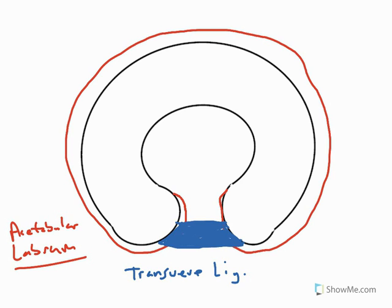So the acetabular labrum and the transverse ligament. Now, as anything else we really want to discuss here, since we are kind of using this as an idea of a toilet seat, we do want to fill it up with some crud here, very important stuff.